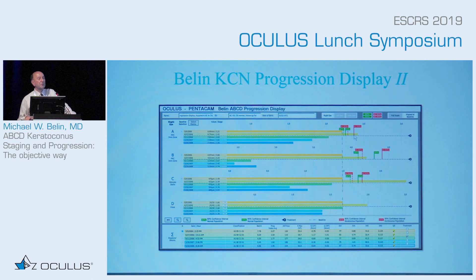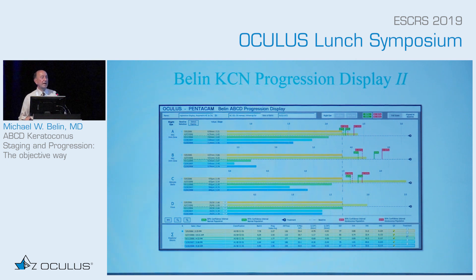Why do we have two different populations? For your early, very early subclinical or young patients, those measurements are probably more closely related to the normal population in noise levels, while your more advanced keratoconics are a noisier group, and there you may want to compare to the keratoconic population.